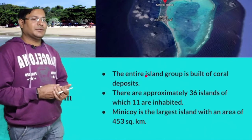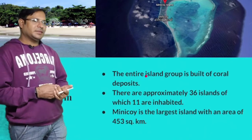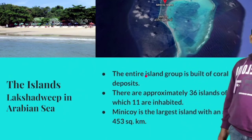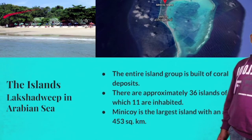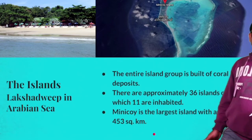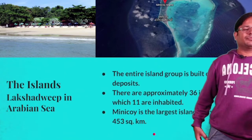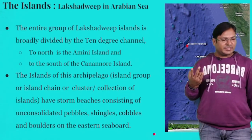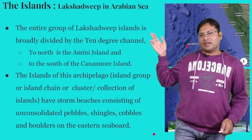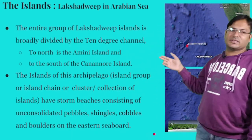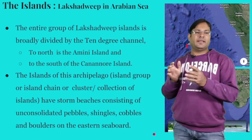Minikoi is the largest island with an area of 453 square kilometers. The entire group of Lakshadweep Islands is broadly divided by the 10 degree channel, which is the water channel lying at 10 degrees north. These are the two island groups.